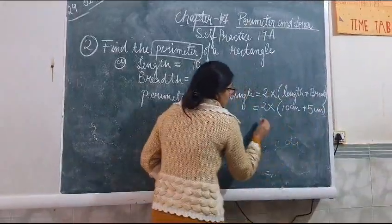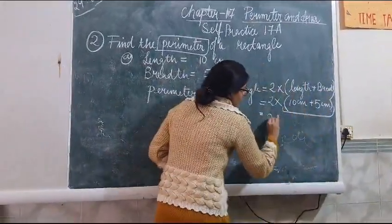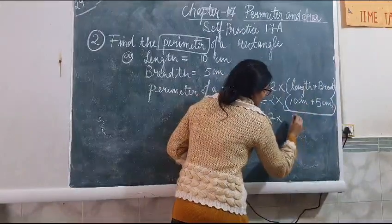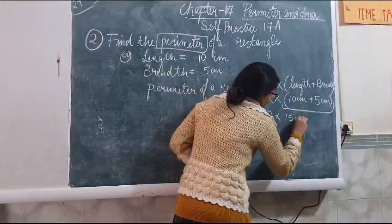Now we will solve, first we will solve the bracket motion. 2 into 10 plus 5, 15 cm.